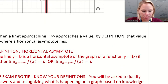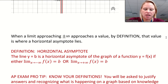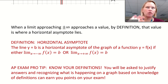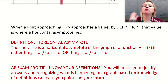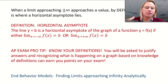This is something you want to get into your notes: when a limit approaching positive or negative infinity approaches a value — in this example, we approach 3 — by definition, that value is where a horizontal asymptote lies. The official definition: the line y equals b is a horizontal asymptote of a function y equals f(x) if the limit approaching either positive infinity or negative infinity equals b. You only need one side or the other. If the limits approach infinity rather than a number, there is no horizontal asymptote.